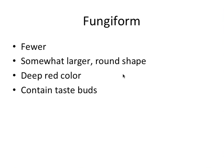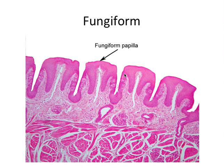The next papilla is the fungiform papilla. There are fewer of these in number. They're somewhat larger and have a rounded, mushroom-ish shape. They have a deep red color because they don't have that thick keratin layer, and they do contain taste buds. Here in the histological image you can see the rounded shapes, the lamina propria projecting upwards, and taste buds embedded in the epithelium layer.